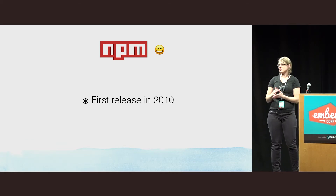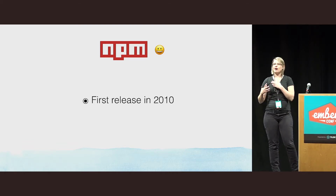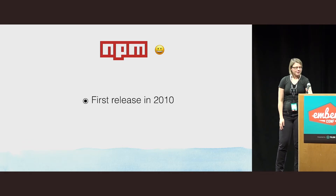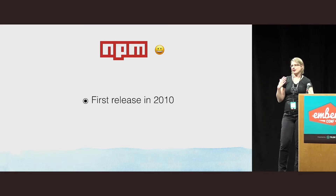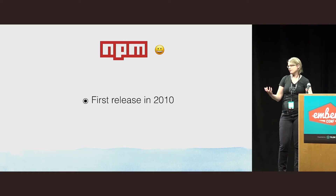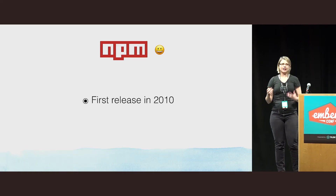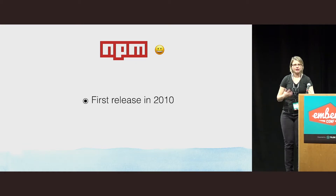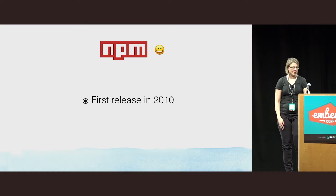NPM came with two things: a registry where you could upload code and download packages, and a client — a toolkit — where you can manage your dependencies.